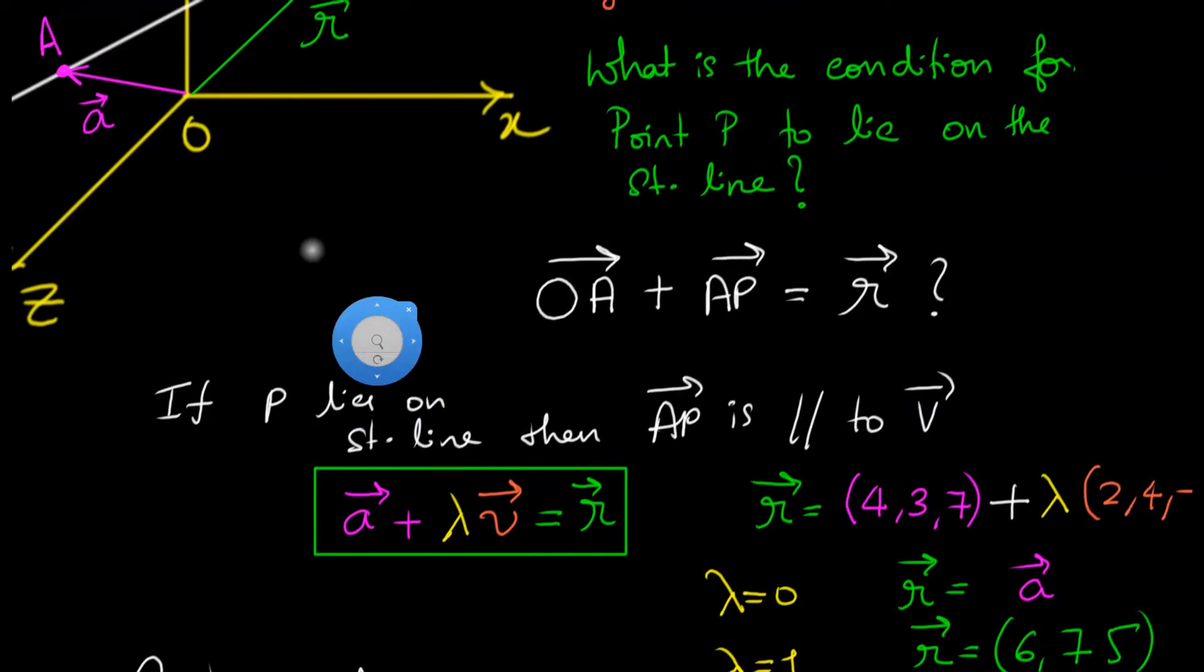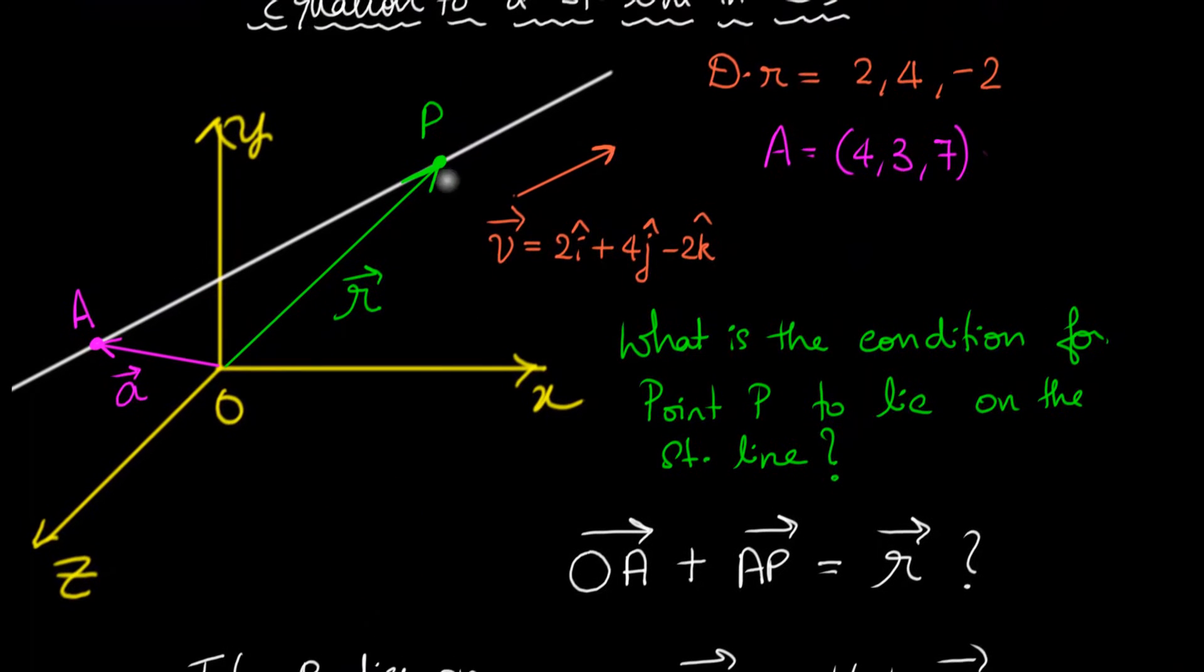To work out the Cartesian form, what we're going to do is we're going to call this random point as x, y, z.